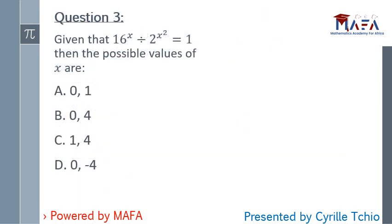Question three: given that 16 to the power x divided by 2 to the power x² equals 1, find the possible values of x.